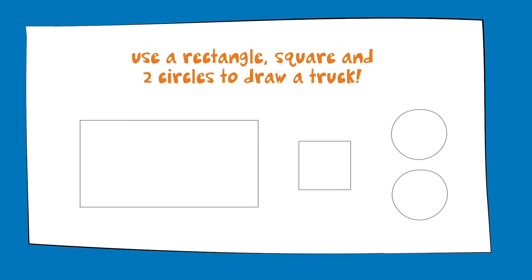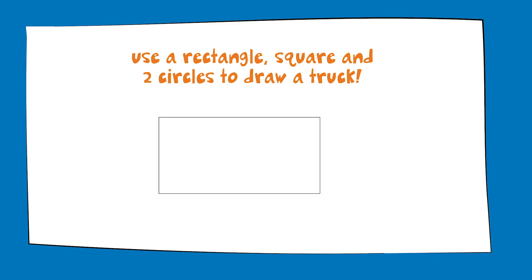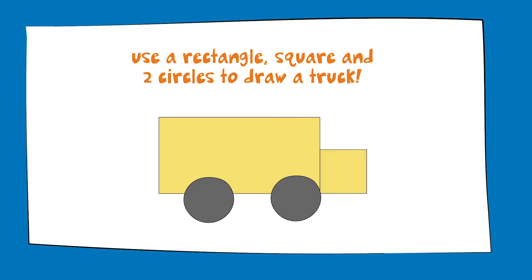Now let's use a rectangle, a square, and two circles to draw a truck. First, begin by drawing one big rectangle — that's the big part of the truck. Next, draw the square to the right of your rectangle — that's the cab at the front of the truck. Next and finally, draw two circles on the bottom half of your rectangle. Now color in your truck however you like — I chose yellow.